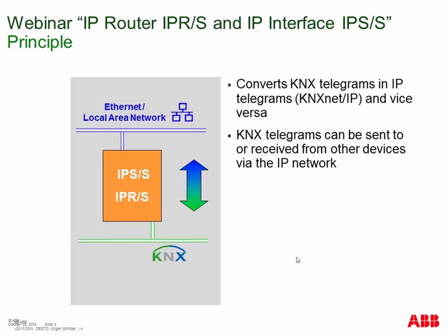What is the task of an IP interface? We have the IP router and the IP interface. First of all, it's a connection between the twisted pair KNX bus cable and the local area network, the Ethernet in your building. The task is to convert KNX telegrams into IP telegrams and vice versa, so communication is possible in both directions. We have the standard protocol on the twisted pair bus cable, but also the KNXnet/IP protocol on the Ethernet part.